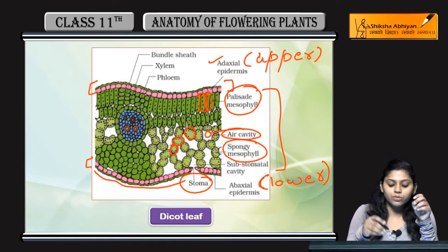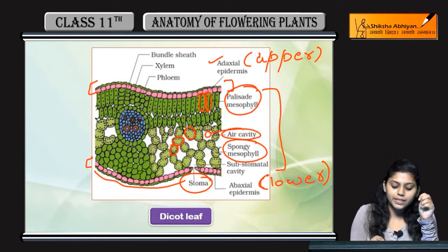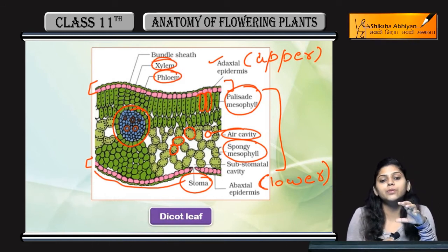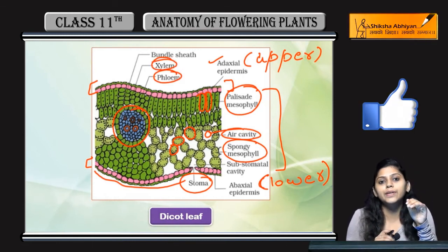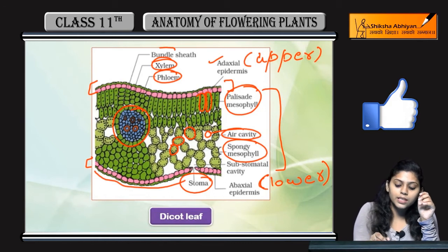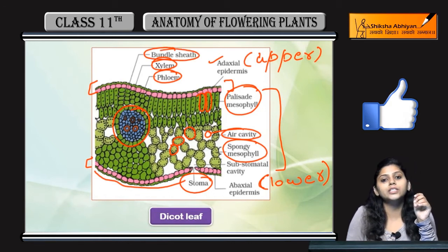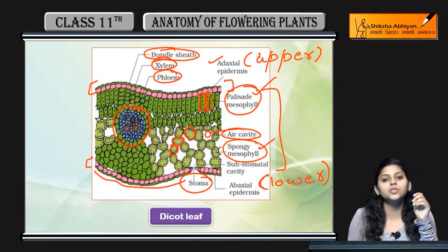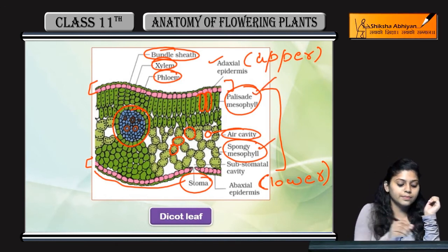अब जो भी vascular bundle present है — phloem and xylem जो भी present है in between epidermal layer — वो surround होगा by bundle sheath cells। जो mesophyll cells हैं, palisade and spongy mesophyll cells, they bear chloroplast.